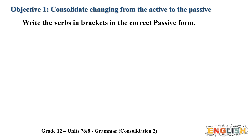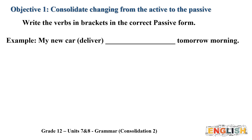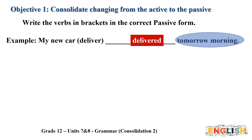Now we'll see how to write a bracketed verb in the correct passive form. Take the verb 'deliver' and write it in the passive voice. The first step is to write the verb in the past participle. Then look for a time expression in the sentence to help decide the tense of 'to be.' The time expression here is 'tomorrow morning,' so we use the future passive — we write 'will be delivered.'